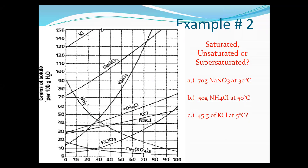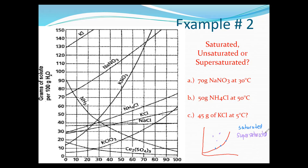Now let's do examples where you determine if a solution is saturated, unsaturated, or supersaturated. To recap: if a point is on the line, it's saturated. If a point is above the line, it's supersaturated. If a point is below the line, it's unsaturated.